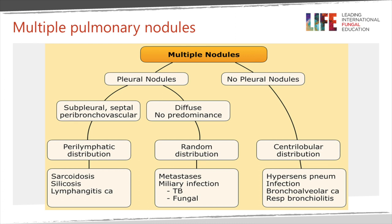The differential of multiple nodules is perhaps easiest done by whether they are located against the pleura or scattered through the lung. If there aren't pleural nodules, typically these are centrilobular lesions such as in hypersensitivity pneumonitis, infection, or sometimes cancer spreading through the airways. If there are pleural nodules, this may be a perilymphatic process — seen with sarcoid, silicosis, and cancer spreading through the lymphatics — or as in this talk, myriad infection due to tuberculosis and occasionally fungal disease.